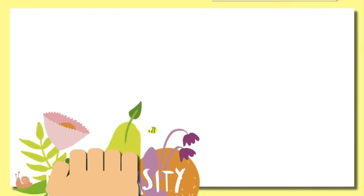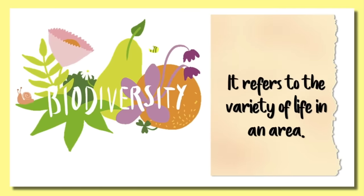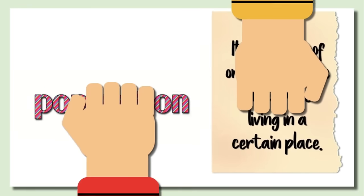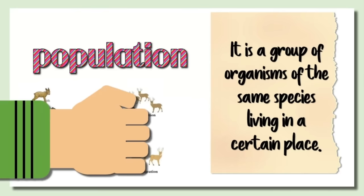First, let us have some definition of terms. Biodiversity refers to the variety of life in an area. It refers to every living thing, including plants, bacteria, animals, and humans. Earth's biodiversity is so rich that many species have yet to be discovered. Next, what is population in biodiversity? It is a group of organisms of the same species living in a certain place.